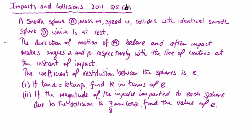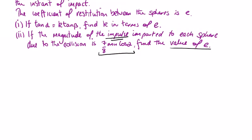Given that the magnitude of the impulse imparted to each sphere due to the collision is 7/8 mu cos alpha, find the value of e. We're given this diagram: two circles, the line of centers, this is A and B, alpha and over this side beta.